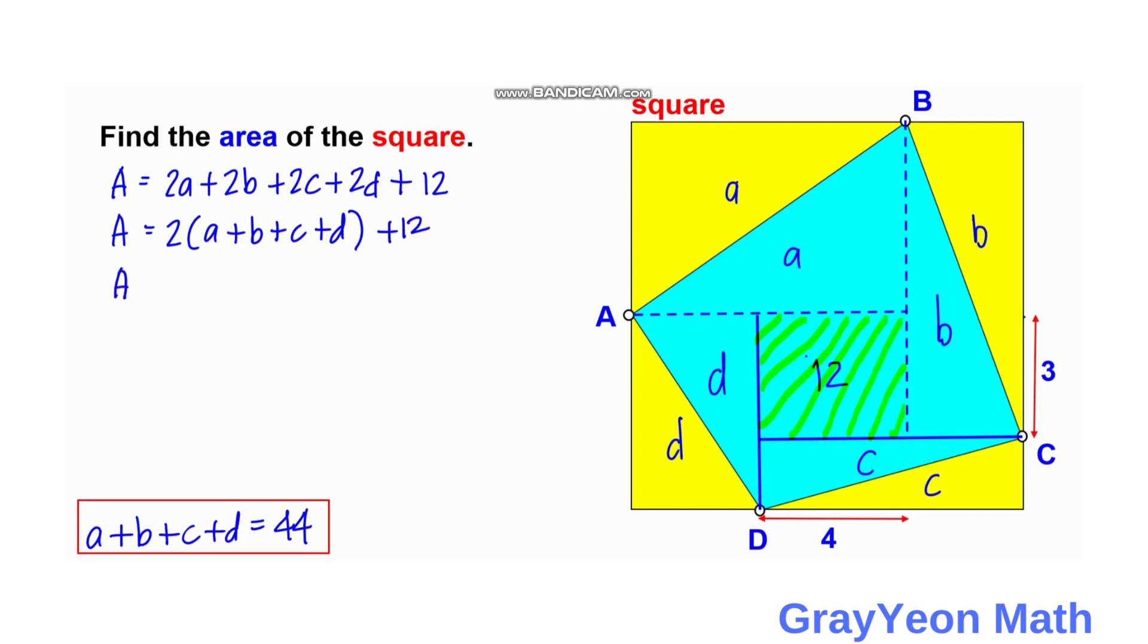Earlier we got A plus B plus C plus D equals 44, so we just need to substitute 44 for the value of A plus B plus C plus D. Area equals 2 times 44 plus 12, so 2 times 44 is 88 plus 12. In total, we have area to be 100 square units. And that is our answer.